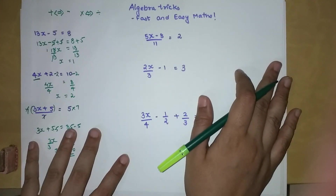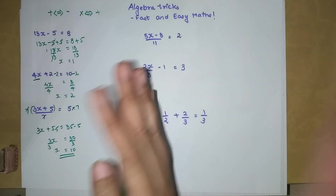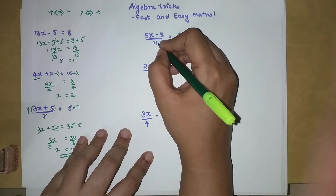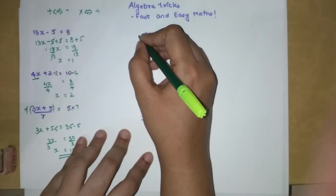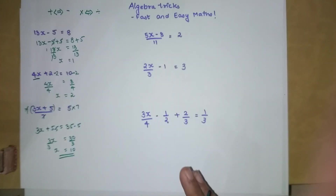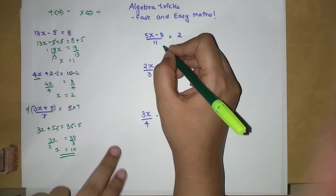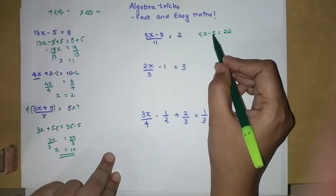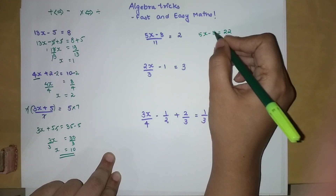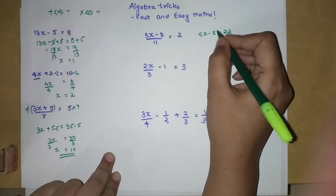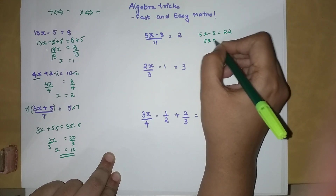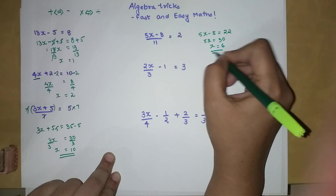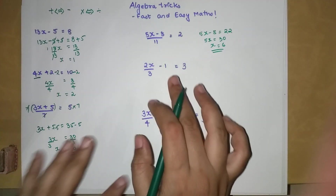Let's do this very quickly. Here we multiply both sides by 11 because 11 is the entire denominator of the LHS. That gives us 5X minus 8 equals 22. I want to get rid of minus 8, so I add 8 to both sides, giving 5X equals 30. I divide both sides by 5, so X equals 6.